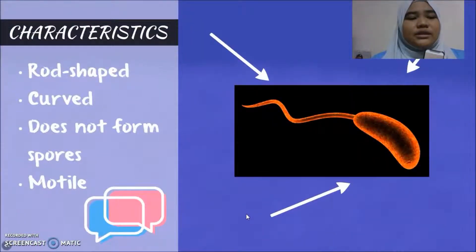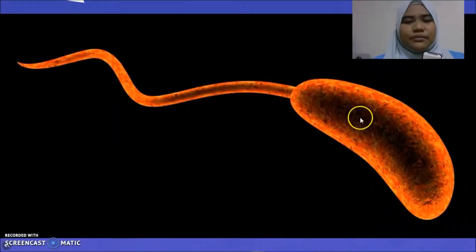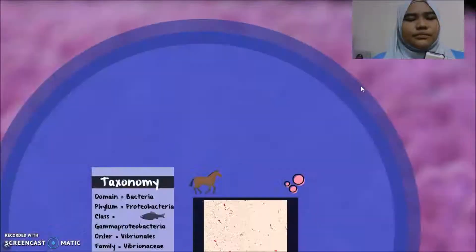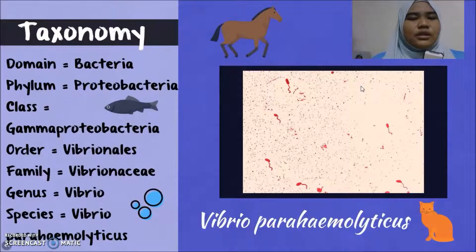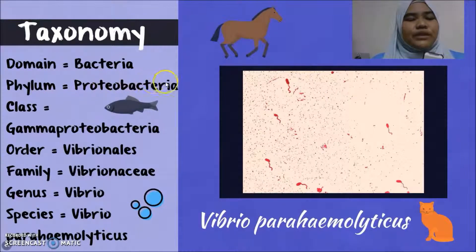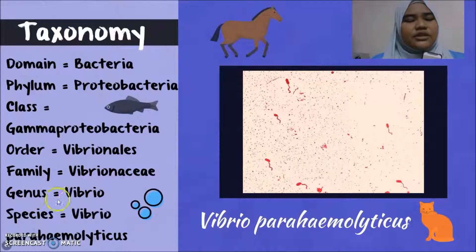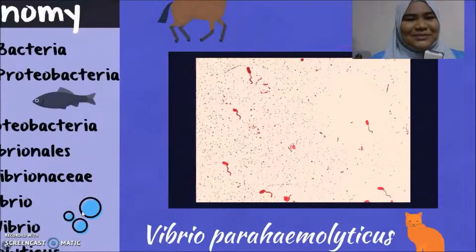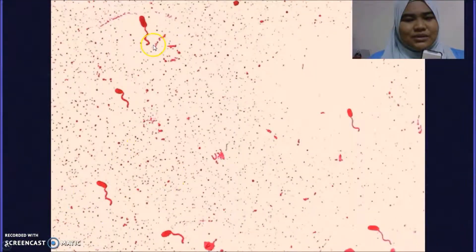The characteristic: it is a rod-shaped curved bacterium that does not form spores and is motile. As you can see here, the rod shape. For the taxonomy: domain is Bacteria; phylum is Proteobacteria; class is Gammaproteobacteria; order is Vibrionales; family is Vibrionaceae; genus is Vibrio; species is Vibrio parahaemolyticus. Here is a closer picture.